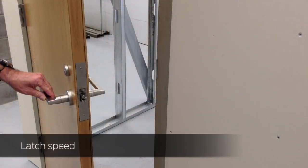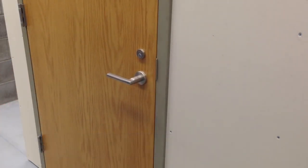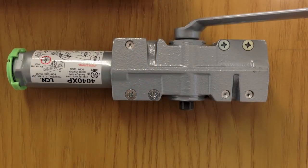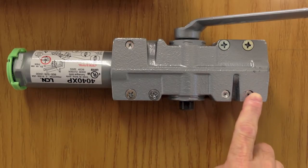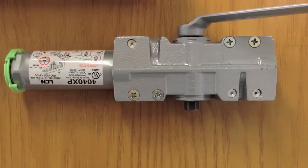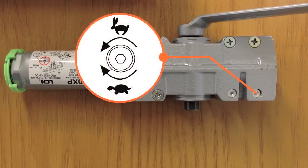Latch speed is the final adjustment which ensures the door latches properly. We recommend only small adjustments to latch speed. The latch speed screw is adjacent to the main speed screw on the face of the closer. Make an adjustment one quarter turn at a time, clockwise to decrease speed and counterclockwise to increase speed.